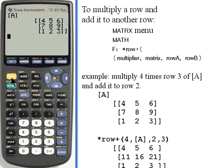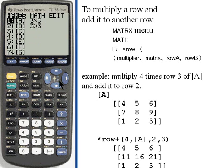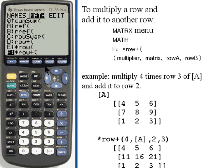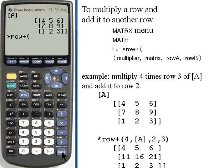I'm going to go to the matrix menu again, over to math, press up, and the very bottom item in this, times row plus, is what we're looking for. The format for this is, I have to tell the calculator the multiplier, how many times I'm going to multiply the row, then the name of the matrix, the row I want to multiply, and then the row I want to add that product to.